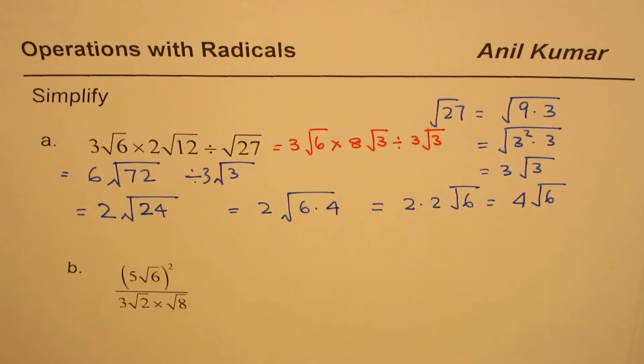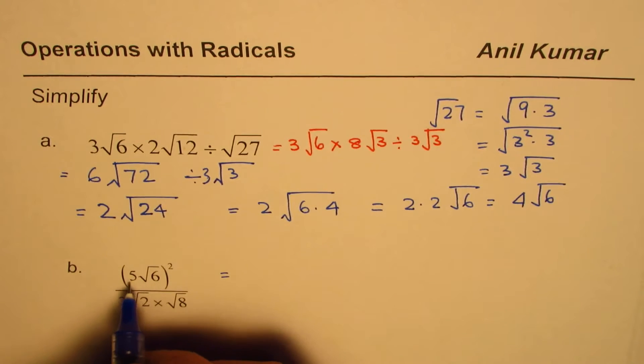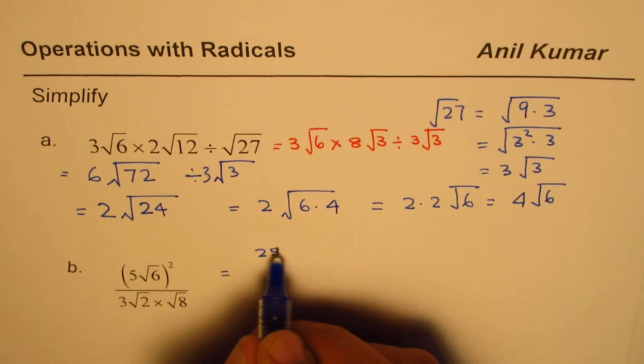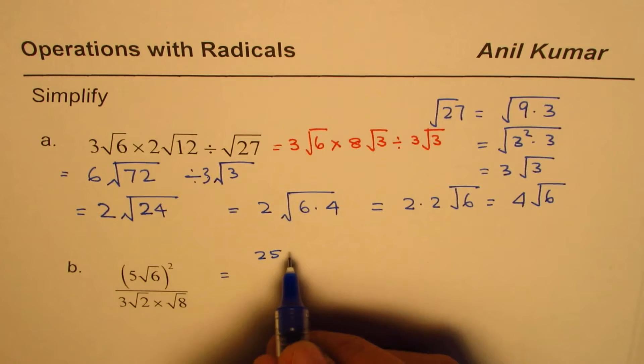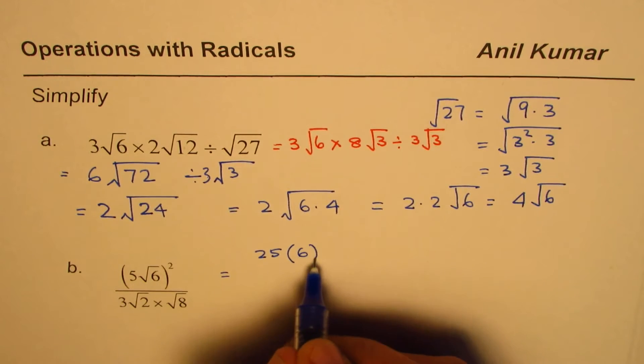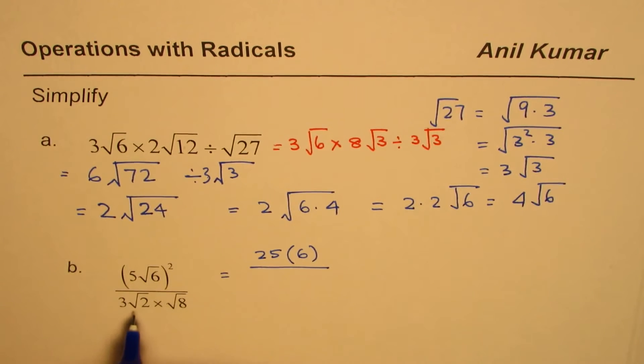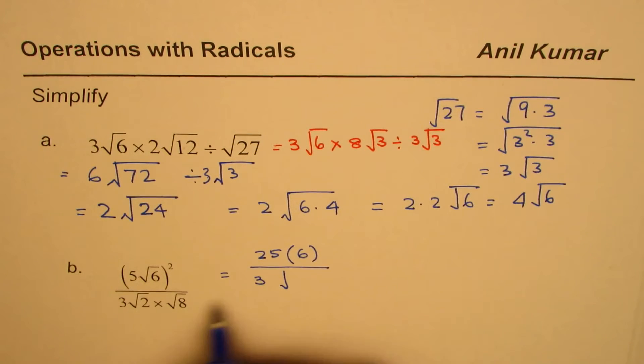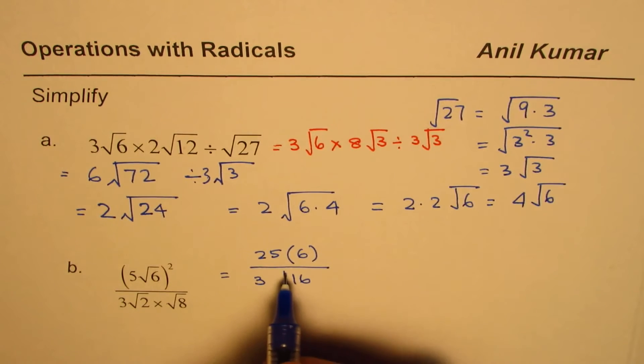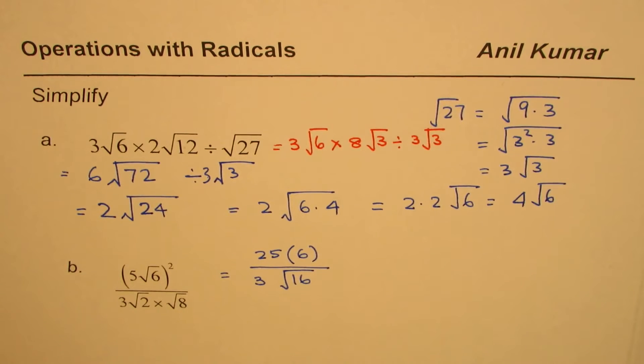When you say whole square, that means 5² is 25, and square of square root is the number itself which is 6 in this case. Divided by, let's multiply these two. So we have 3√(8×2) = 3√16. When you multiply, the radicands get multiplied with the radicand, coefficients get multiplied by the coefficient.